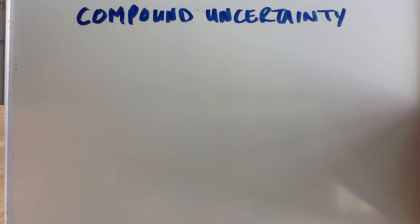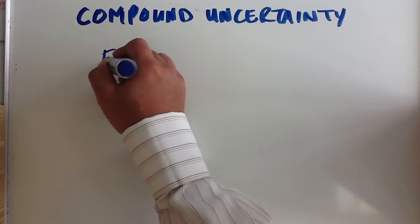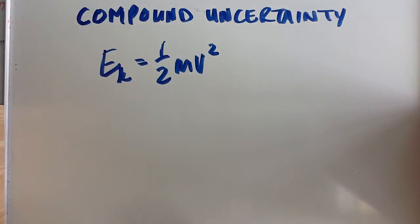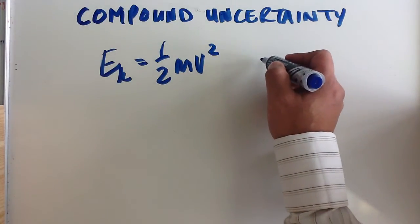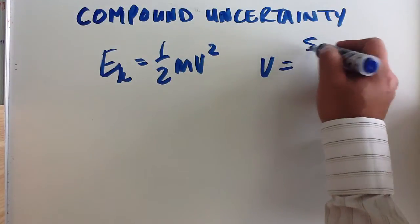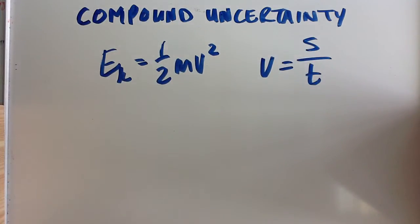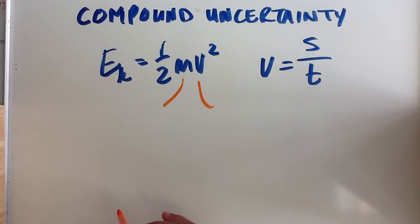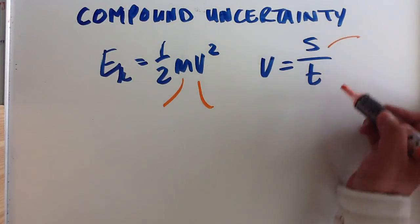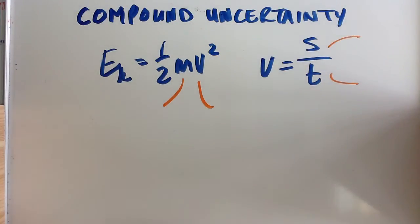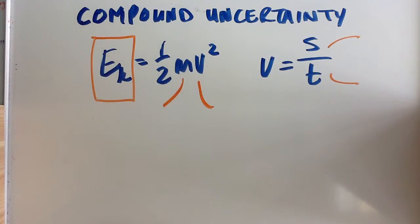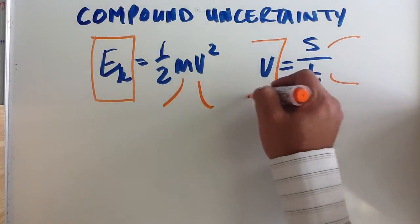So let's think, for example, you've got an equation of kinetic energy, E_k = 1/2 m v^2, and we've got another equation of velocity, v = s/t. In this case, you can have an uncertainty for both the mass and the velocity, and they can be different, and you can have an uncertainty for the displacement and the time, and they can be different as well. But you are asked to find the uncertainty of the kinetic energy in this case and the velocity in this case.